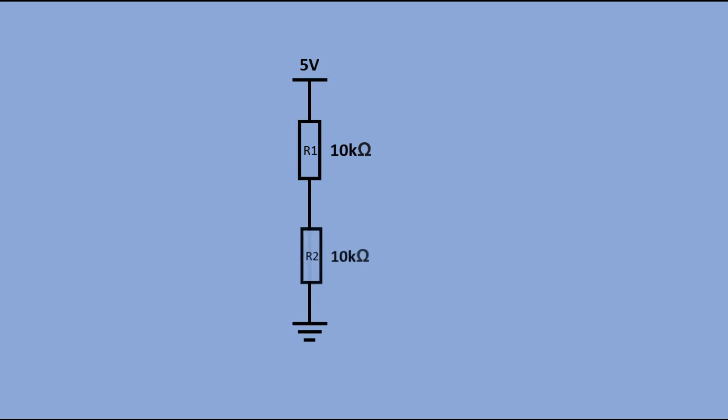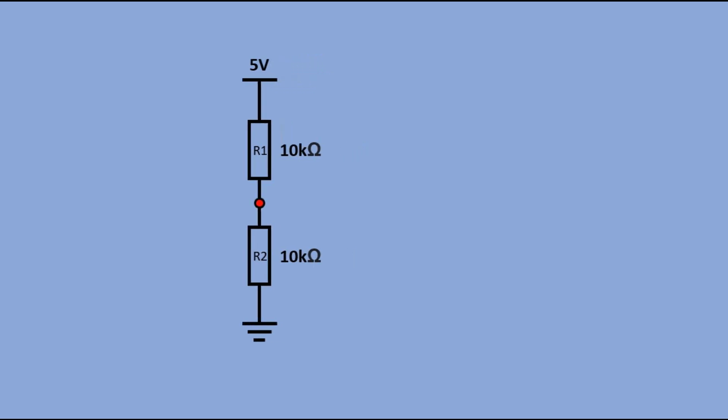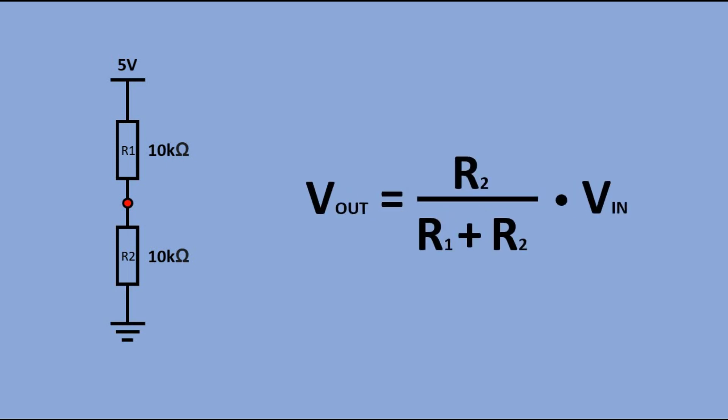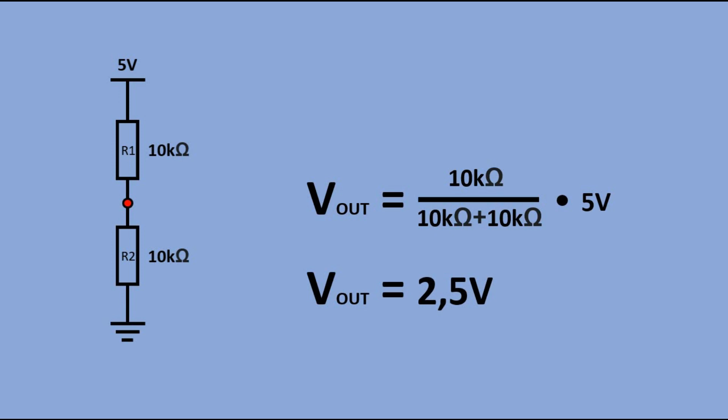Here we have a 5 volt input voltage and two 10 kOhm resistors connected in series. What would be the voltage measured in between those resistors? There is a formula to calculate that voltage. If we do the math, we get the output voltage of 2.5 volts.